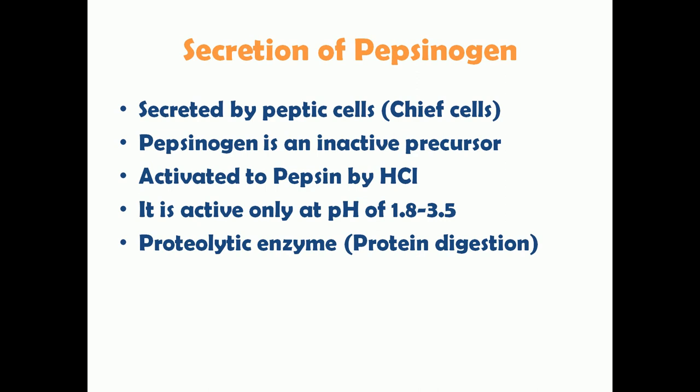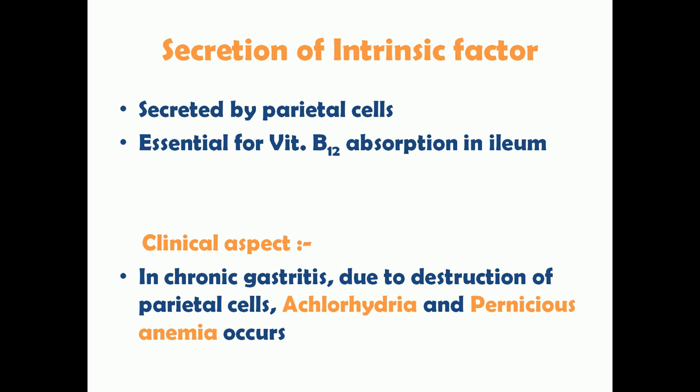An important fact: the stomach is not significantly involved in carbohydrate digestion. There are no specific enzymes in the stomach for carbohydrate digestion. Carbohydrate digestion begins in the mouth via salivary amylase, but when food reaches the stomach, salivary amylase is deactivated by hydrochloric acid. Carbohydrate digestion resumes in the small intestine, taken over by pancreatic amylase.